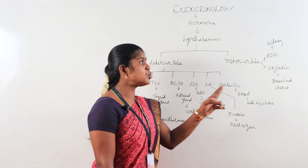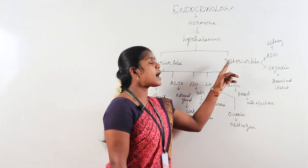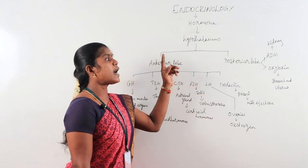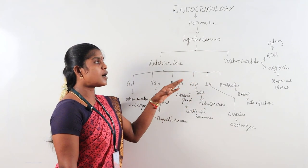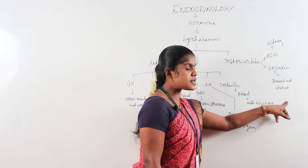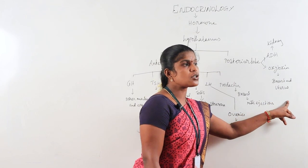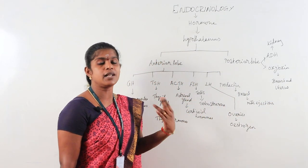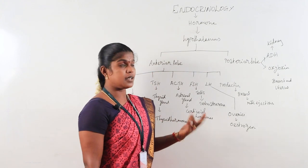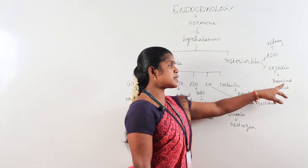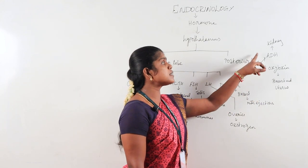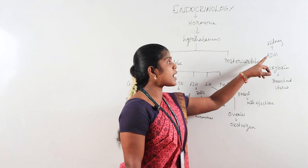The posterior pituitary secretes two major hormones: oxytocin and vasopressin (ADH). Oxytocin acts on the breast and uterus and is involved in the milk ejection process. It also acts as a local feeling hormone during labor pain.